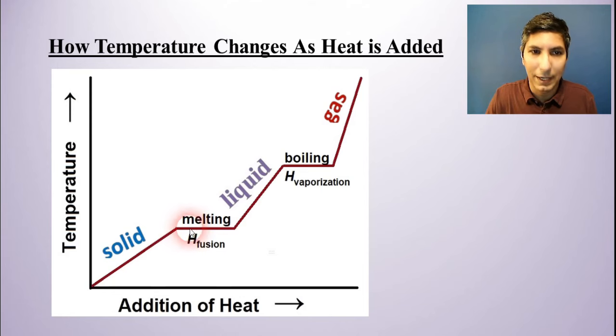Well, this is a process called melting. And so this is the melting point. So when you have a substance at the melting point, you add heat, but the temperature doesn't go up. It stays constant over the melting process.